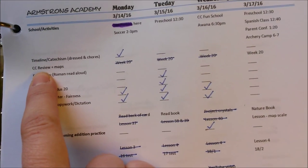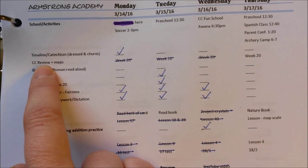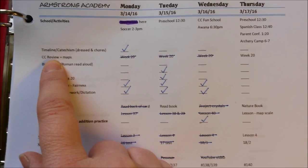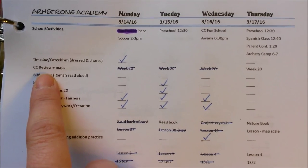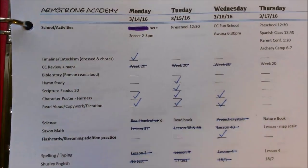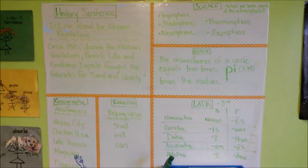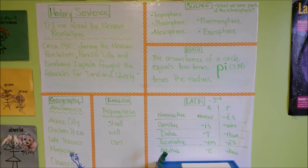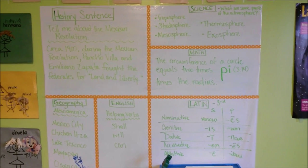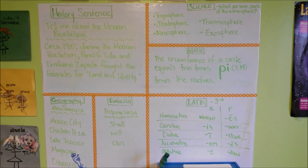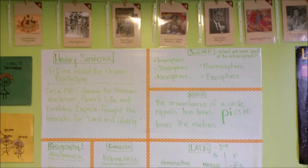I'll show you all the books and everything we are using. First we have our CC — Classical Conversations — review, right here on our wall. We go over all of it: the history sentence, the science, the math, the Latin, the English, and the geography for this particular week. Our timeline cards are up there as well.